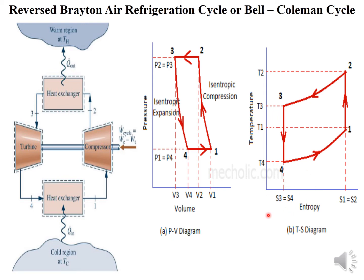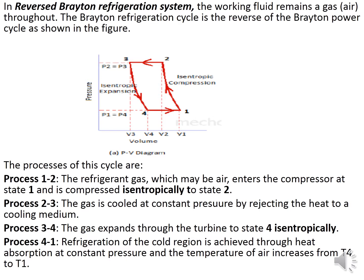Whatever is the refrigeration or heat pump or heat engine, PV raise to gamma for isentropic compression remains same. Here P is constant. In a reversed Brayton refrigeration cycle, the working fluid remains as gas, air, throughout. The Brayton refrigeration cycle is reversed of Brayton power cycle. Same processes 1 to 2, 2 to 3, 3 to 4 and 4 to 1.